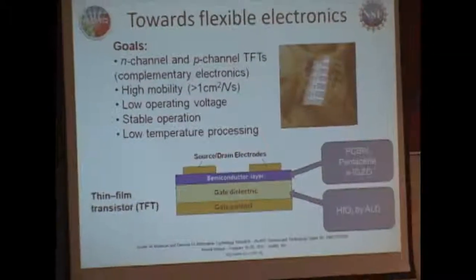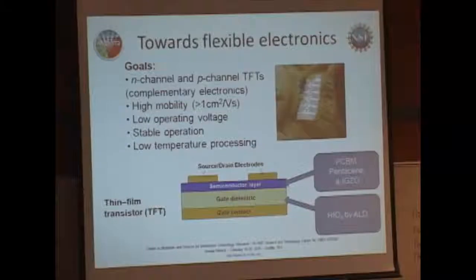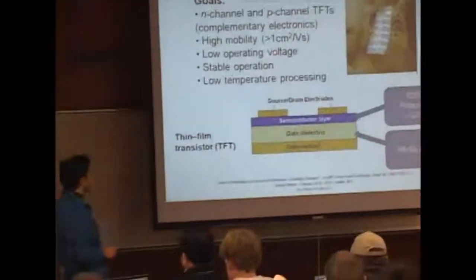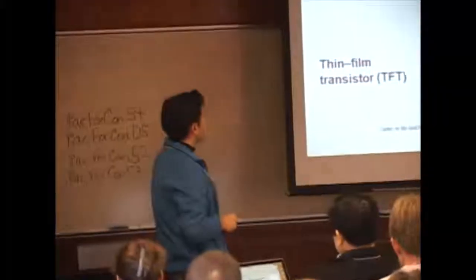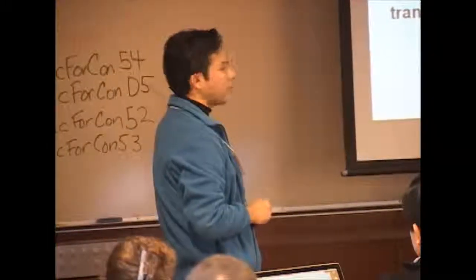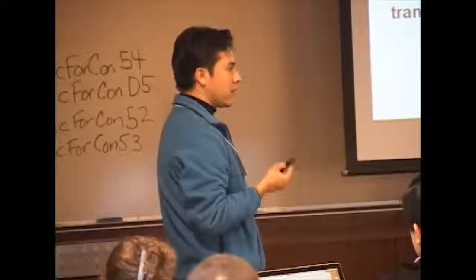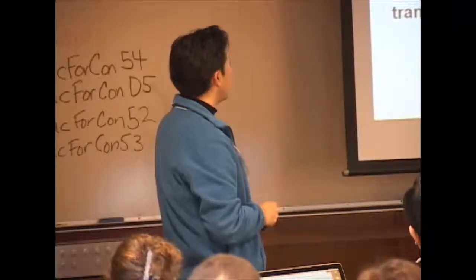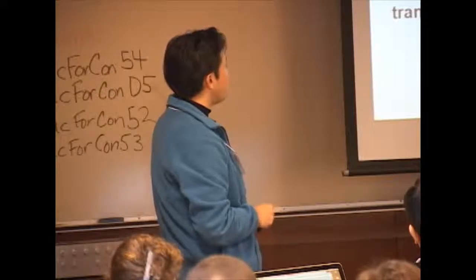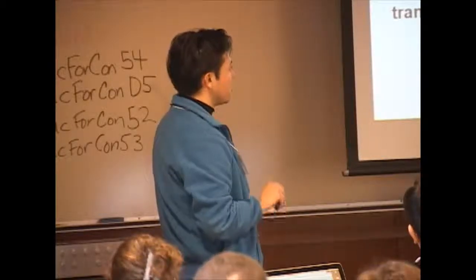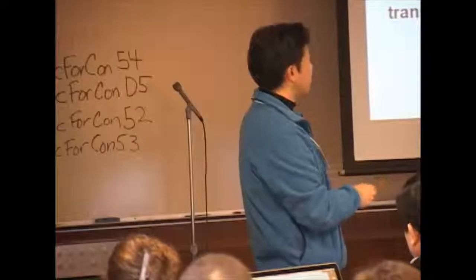What we want to do — as Denise and Sam already mentioned — is basically replace amorphous silicon. To do that, we need devices with mobilities larger than one square centimeter per volt-second. We also need to develop N-channel and P-channel thin-film transistors to implement complementary electronics. These devices need to operate at very low voltages, have stable operation, and be processable at low enough temperatures for flexible substrates.